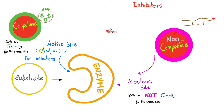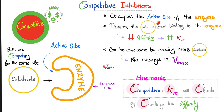Competitive inhibitors bind to the active site, competing with the substrate for that site. Nancy the non-competitive inhibitor is not competing with the substrate for the active site — that's why she is non-competitive. Because competitive inhibitors occupy the active site and prevent the substrate from binding, the affinity between substrate and enzyme drops and Km will rise.